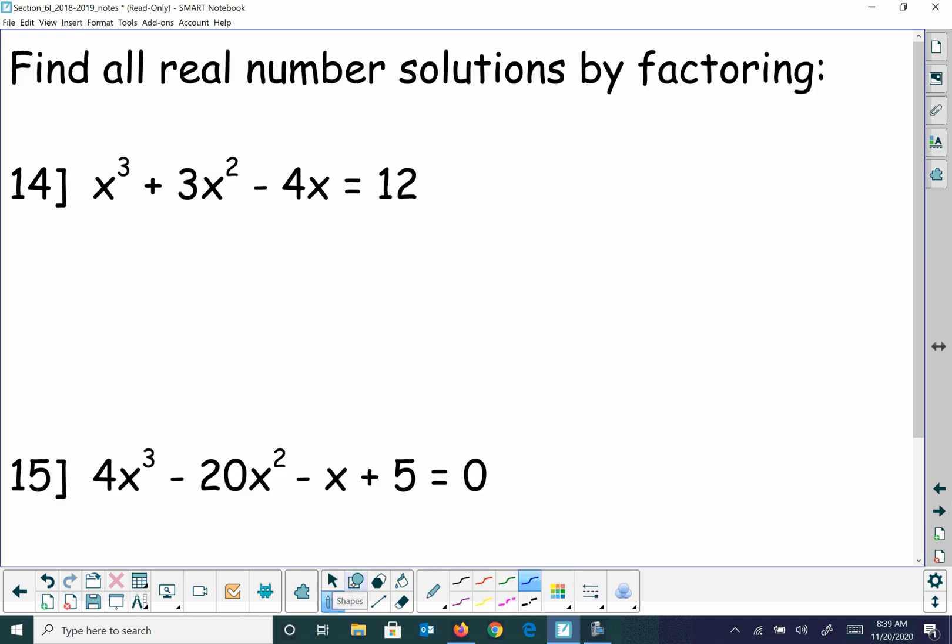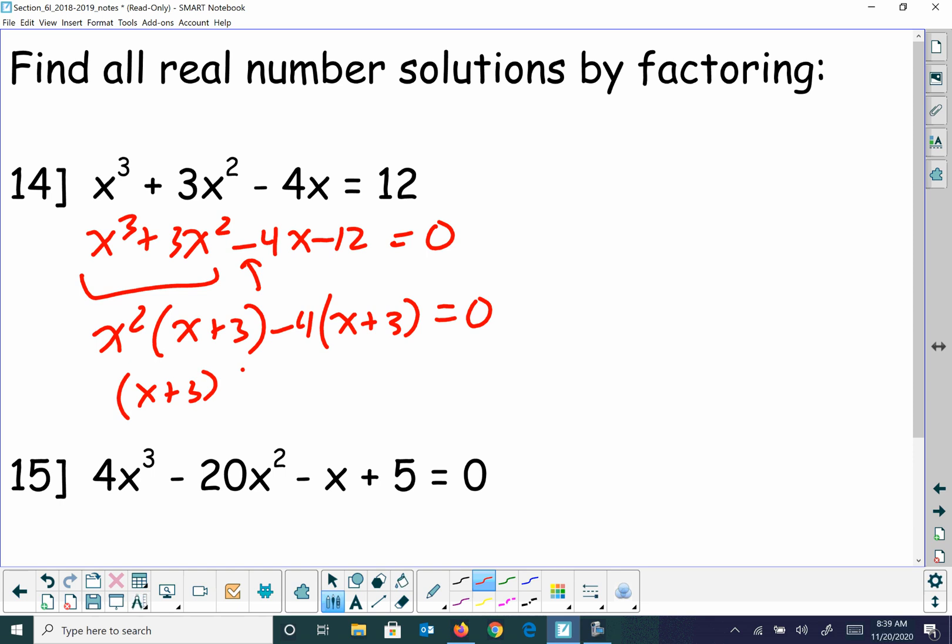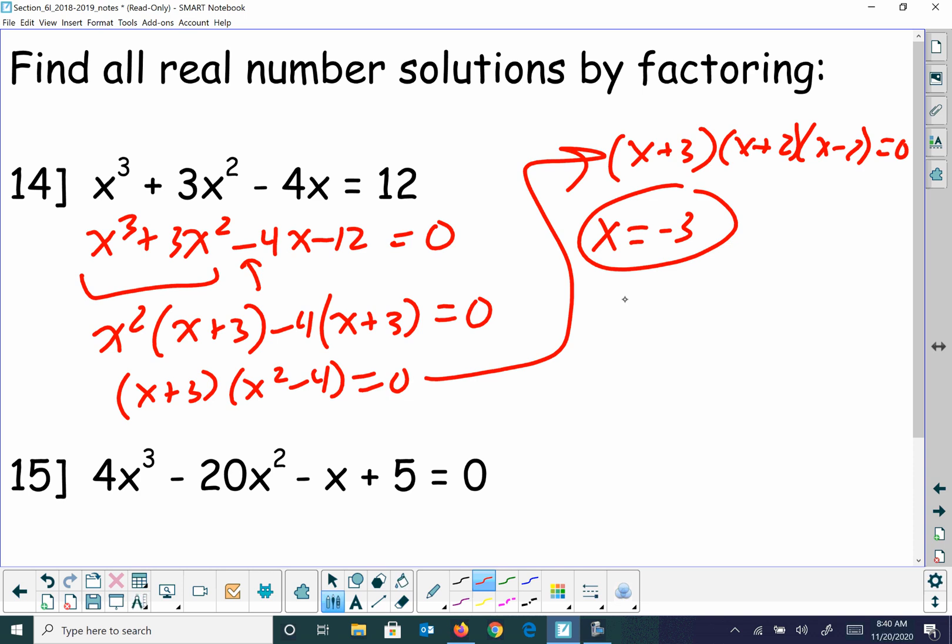All right, these ones, they want us to actually find the real number solution here. Okay, there's an equal sign, so I'm going to bring the 12 over by subtracting it, and this becomes equal to 0. I can factor out an x squared, and that leaves me x plus 3. Remember, I have a negative there, so I'm going to factor a negative 4. So that's going to give me x plus 3. x squared minus 4 equals 0. You technically should factor it all the way down, so you get x plus 3. x squared minus 4 is x plus 2, x minus 2. And it's equal to 0. So those each equal to 0, so I wind up with x equals negative 3, x equals negative 2, and x equals positive 2.